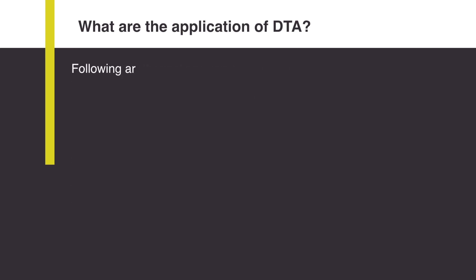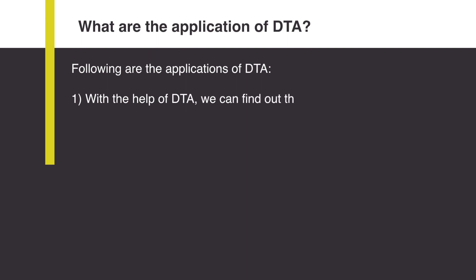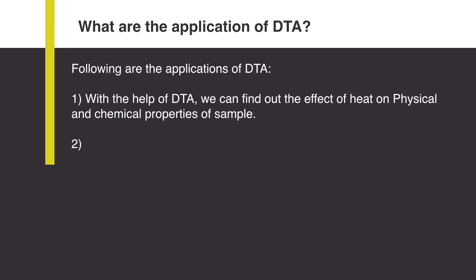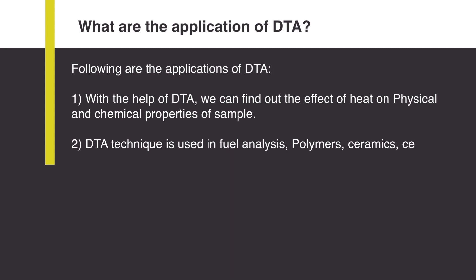Following are the applications of DTA. With the help of DTA, we can find out the effect of heat on physical and chemical properties of a sample. The DTA technique is used in fuel analysis, polymers, ceramics, cements, and in pharmaceutical fields.